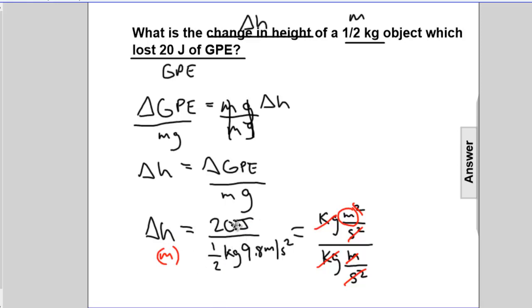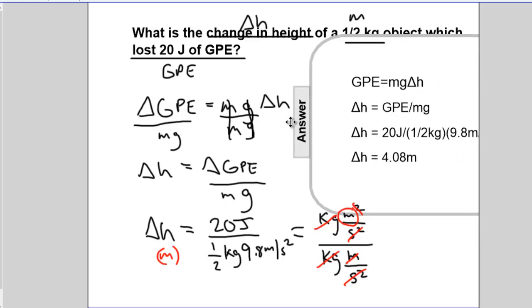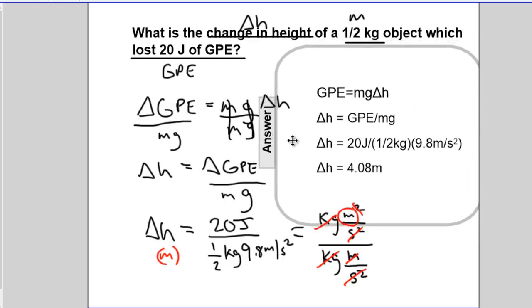Now we can reveal the answer. Twenty divided by one-half times 9.8: one-half times 9.8 is 5, so 20 divided by 5 is about 4. The answer is 4.08 meters. Very nice.